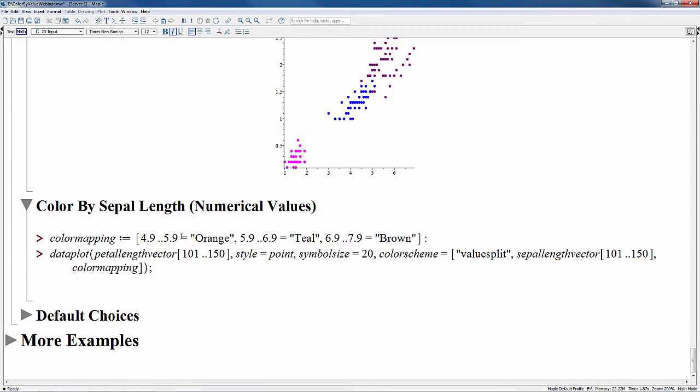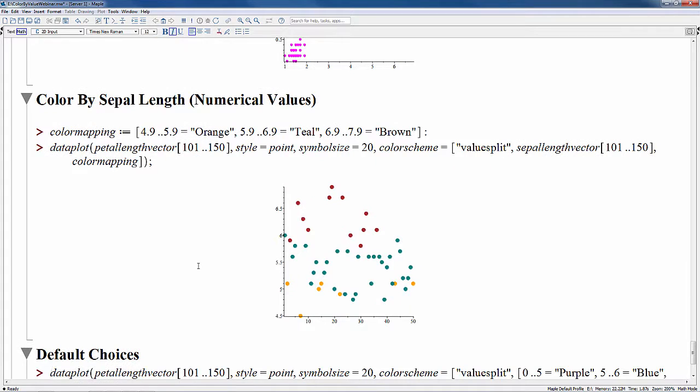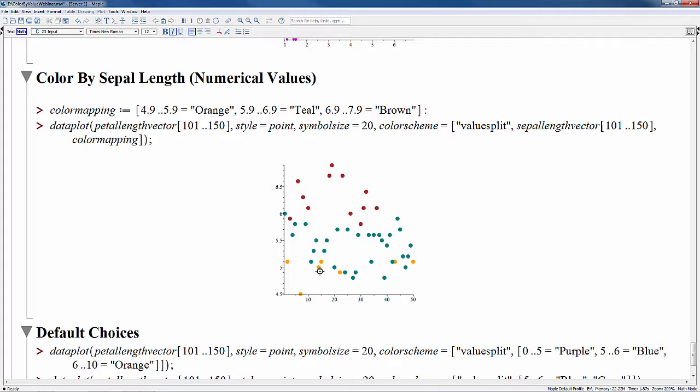Now you might be wondering about the duplicates like 5.9 here. And these are resolved in a simple way. All the comparisons are done in order. So the color is determined by the first match that occurs. So if Maple encounters a data point of 5.9, then it would automatically match to orange and then skip the rest. So let's create our plot. And so you can see here the samples with sepal length between 4.9 and 5.9 are colored in orange and so on.